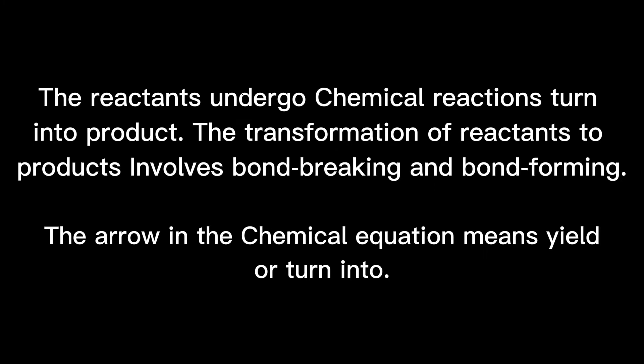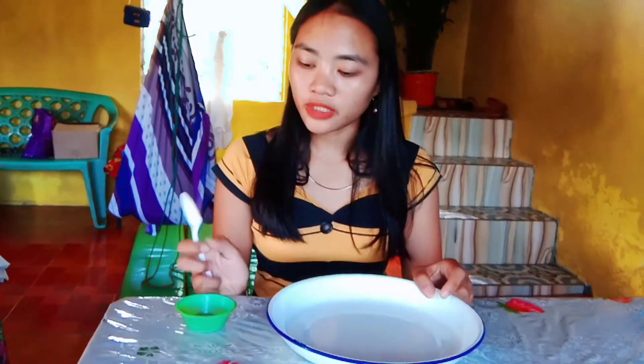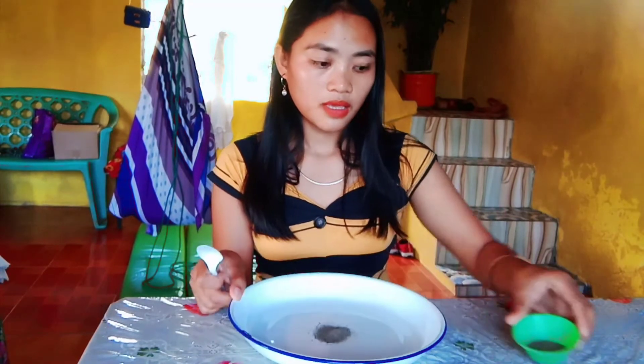I have here a plate, a plastic spoon, and paper. First, we will put the paper here on the plate. Then, using the spoon, we will rub it in our hair. After a minute, we will put the spoon closely near our paper to see what will happen.